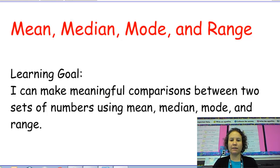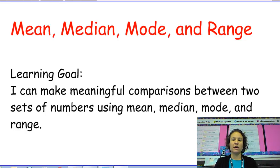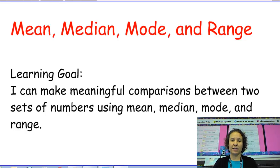Hi everybody. Today we're going to talk about mean, median, mode, and range. This goes with the learning goal: I can make meaningful comparisons between two sets of numbers using mean, median, mode, and range. What we use mean, median, mode, and range for is when we have a big set of numbers and we want to be able to talk about and compare them to other big sets of numbers. They can take a whole set of numbers and boil it down to just one number, which helps us make comparisons. They all mean different things, so they tell you different things about a set of numbers, but they're all useful in comparing large sets of numbers. We're going to go through each one of those four things, plus one other vocabulary term you should include in your notes.